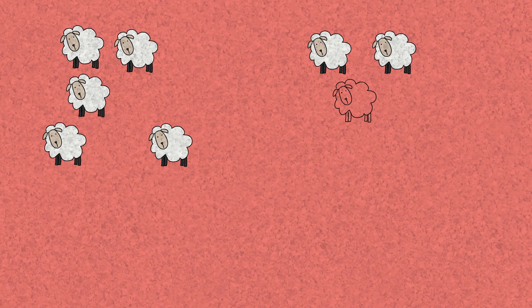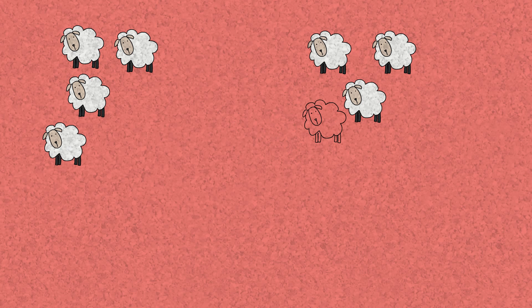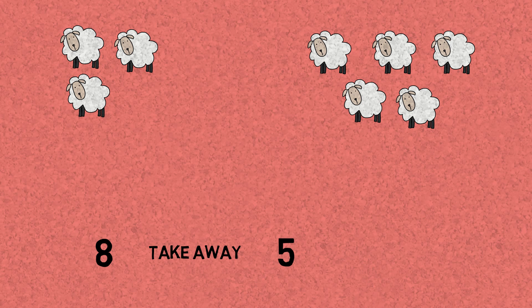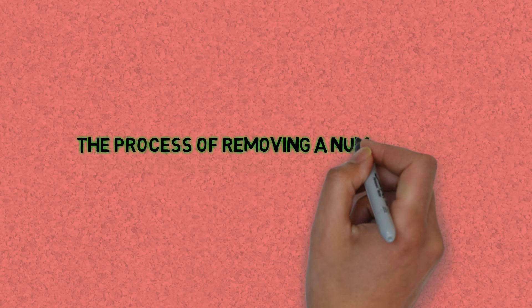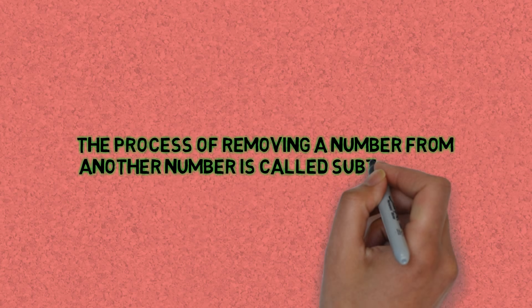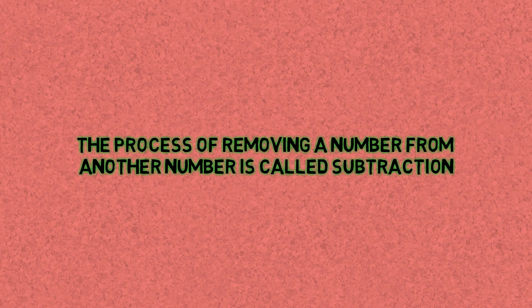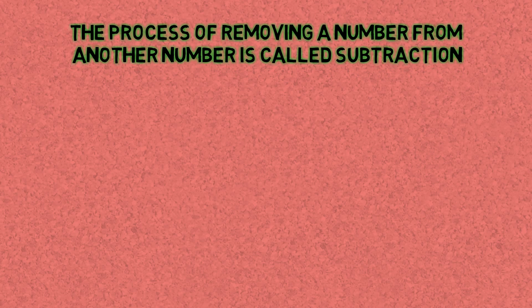We repeat that process until we've separated the quantities into what we were looking for. So we conclude that eight take away five is the same as three. The process of removing a number from another number is called subtraction.